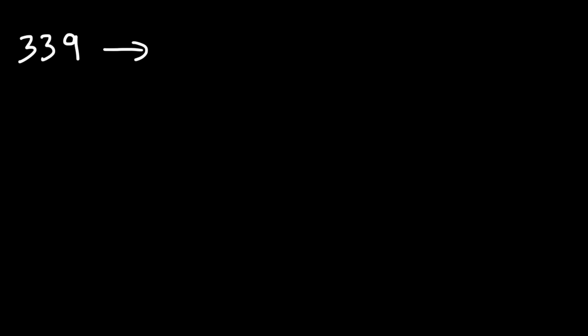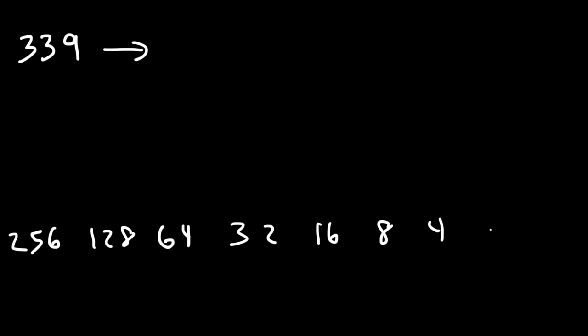Here's another example — let's try a bigger number: 339. Go ahead and work on that example. This time, we need a number that's higher than 128. 128 times 2 is 256. So we're going to start with 256, and then 128, 64, 32, 16, 8, 4, 2, and 1. So 256 is the highest number in this list that's just under 339.